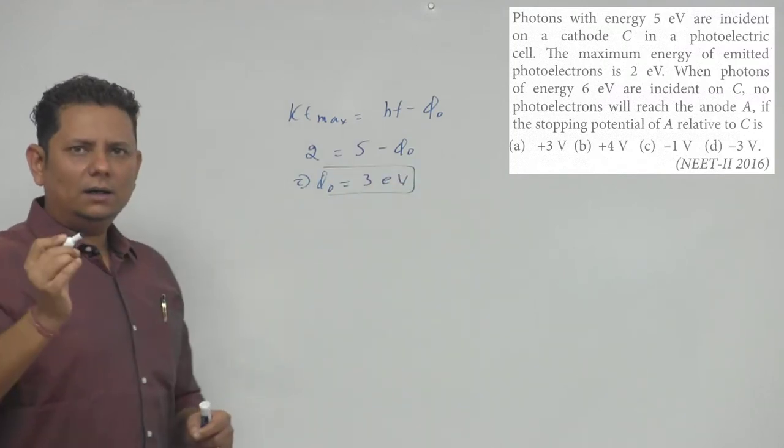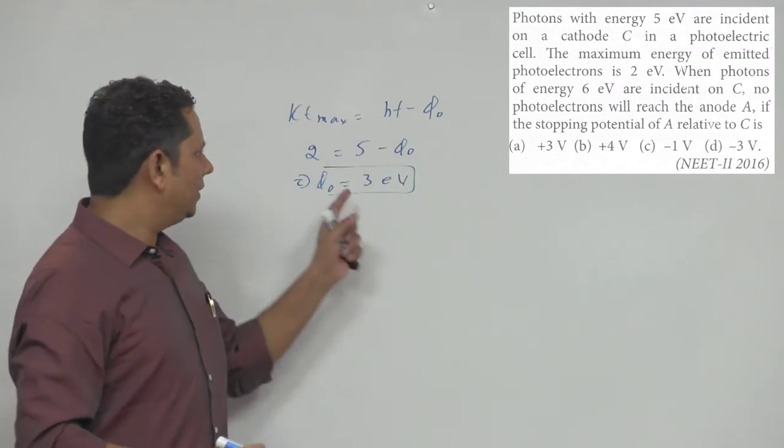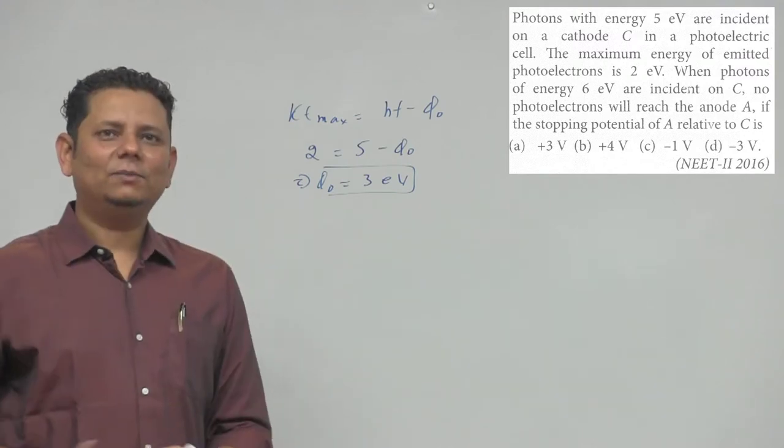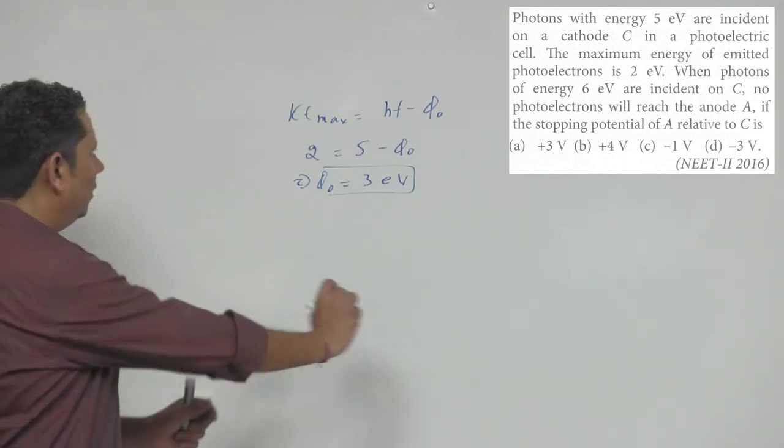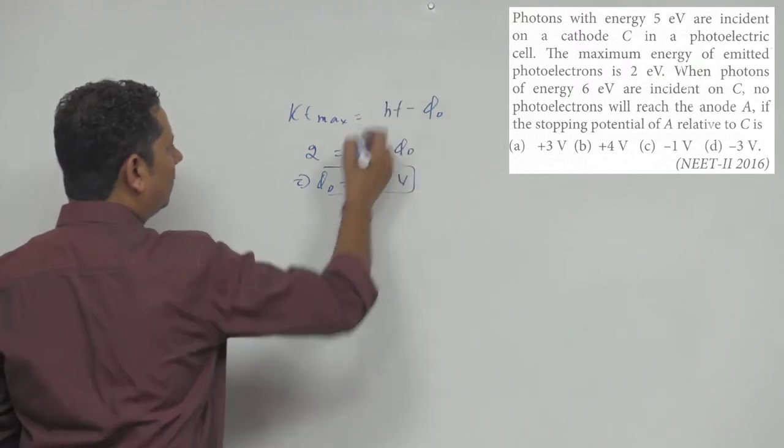So you have a metal plate with work function 3 electron volt. The energy provided to you is 6 electron volt. So in the second case, the energy provided is 6 electron volt.